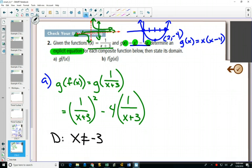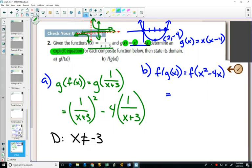In B, we want to figure out the explicit equation for f of g of x. Well, g of x is x squared minus 4x. And the function f says whatever you put in to f, you do 1 over that value plus 3.